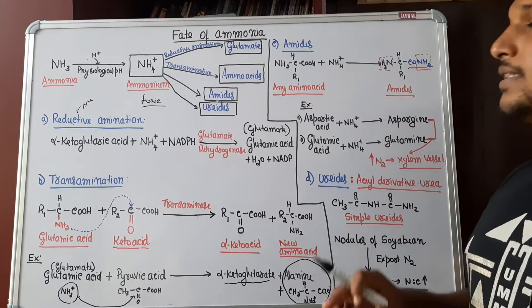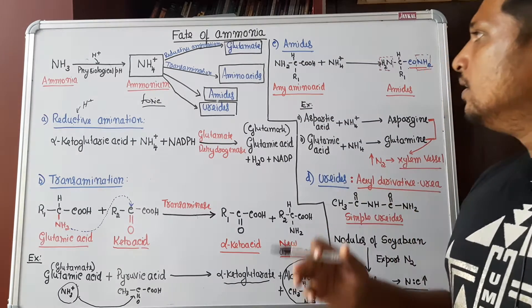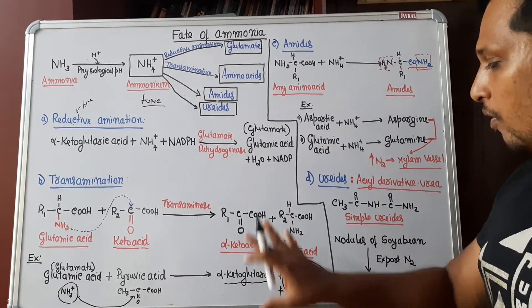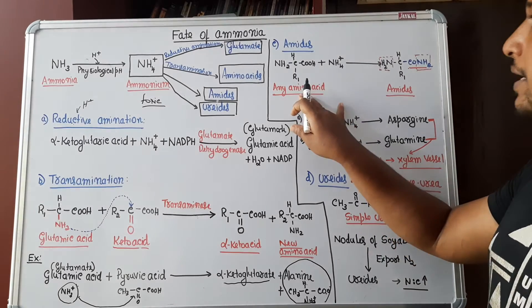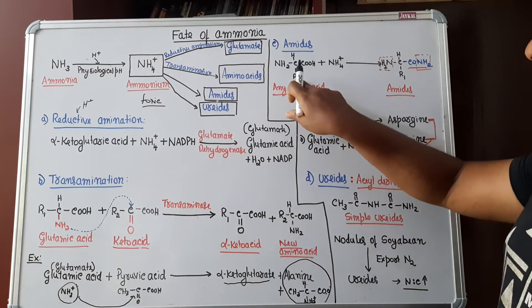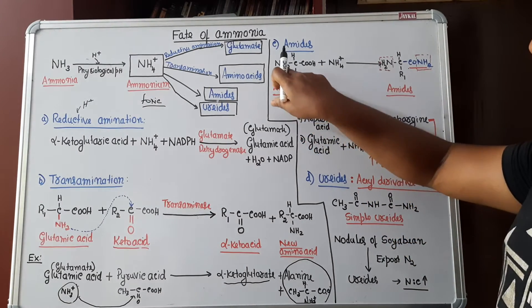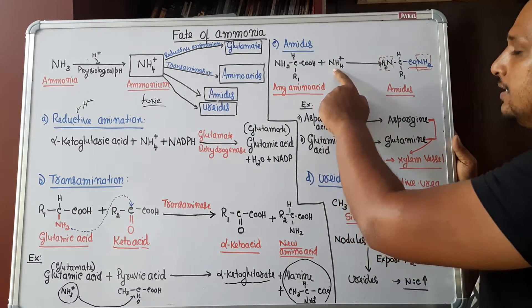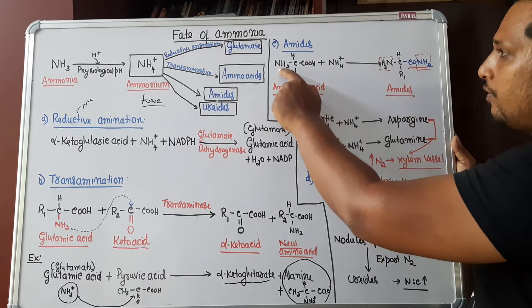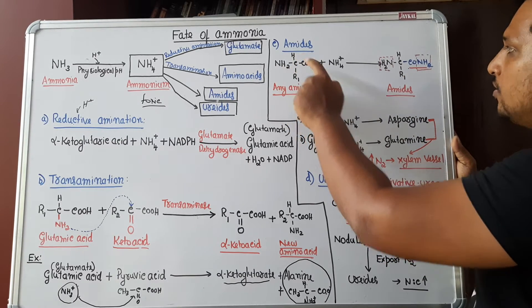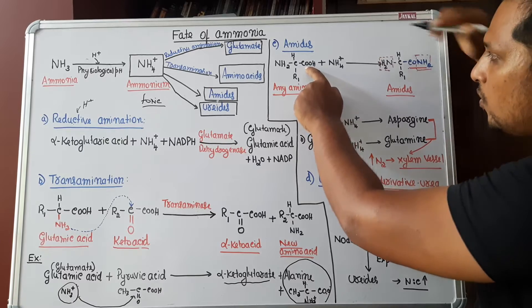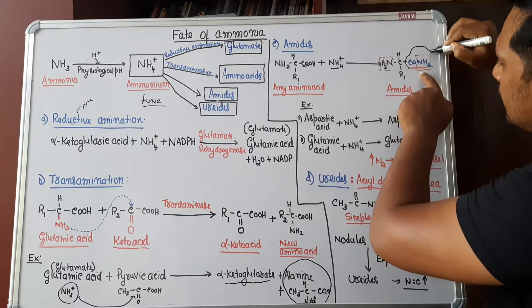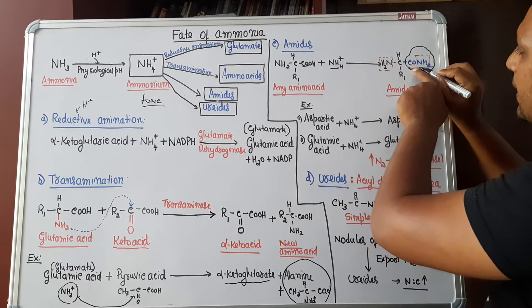Third fate of ammonia is they form amides. What are amides? What is the benefit of forming amides? Let us understand. Now, all other amino acids are formed. To that, any amino acid, amino acid is represented as R1, NH2, CH, COH. Ammonium group is added. There will be preparation of amides. Look at how it is formed. NH2 same. CH is also same. CO and NH2 will be joining to form a group known as amide.